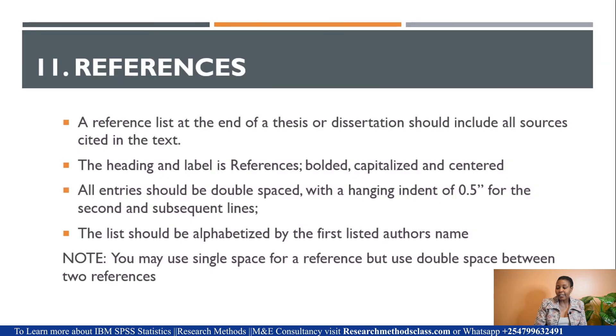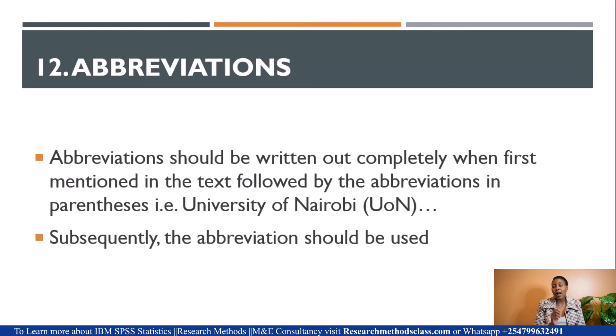References: A reference list at the end of the dissertation should include all sources cited in the text. The heading or label References should be bolded, capitalized, and centered. All entries should be double-spaced with a hanging indent of 0.5 inches for the second and subsequent lines, and should be ordered by the first listed author's name. Follow the alphabet when listing references. Note that you may use single space for a reference, but use double space between two references.